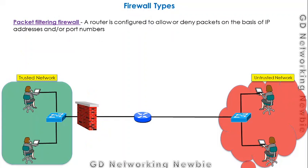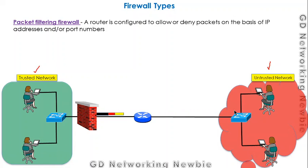The first type is the packet filtering firewall. As the name suggests, in this kind of firewall a router can act as a firewall. The router is configured such that when information comes from an untrusted network to the trusted network, the firewall checks the header part of the packet, which contains the source IP address, destination IP address, and port numbers. Decisions are made on the basis of this IP address and port number.